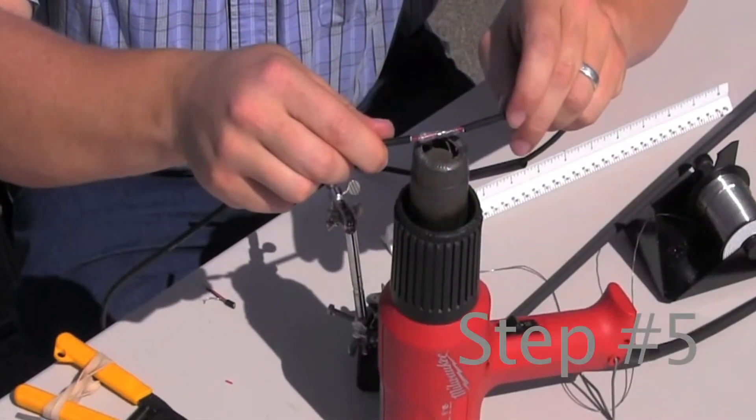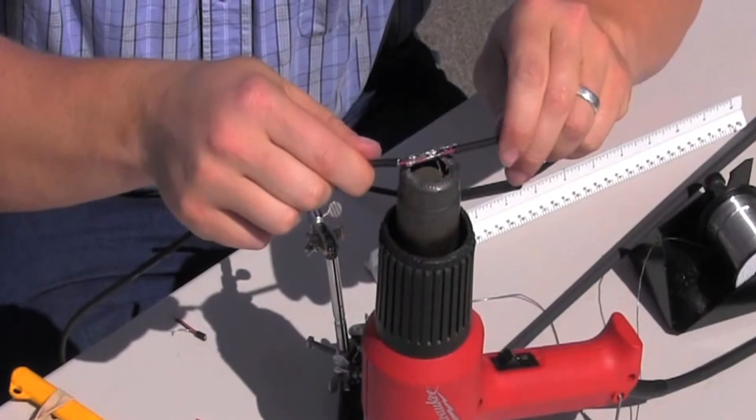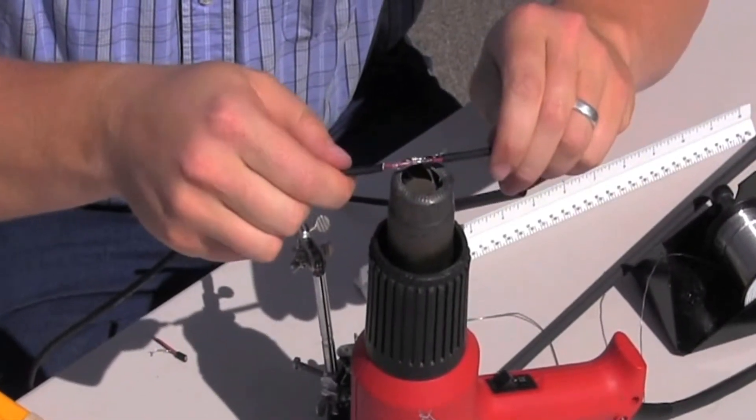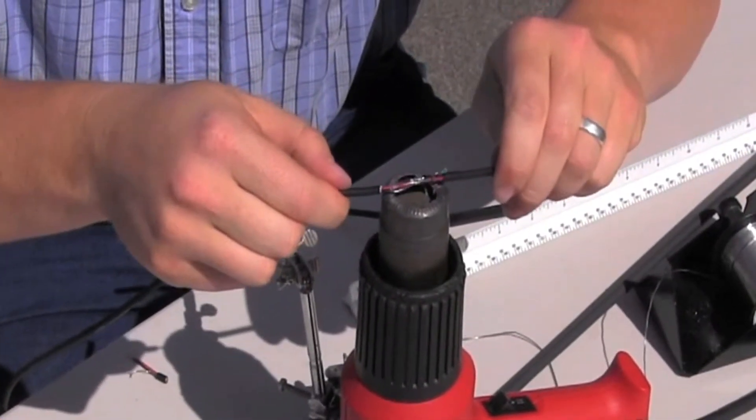Step five: heat the solder sleeves using a heat gun until the solder flows. Remove the heat and be careful not to pull on the cable or individual wires until the solder is set.